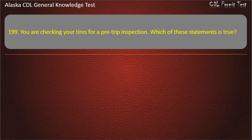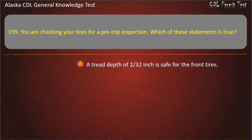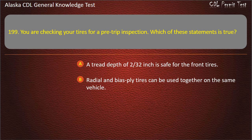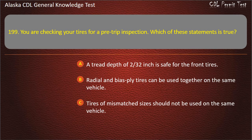Question 199. You are checking your tires for a pre-trip inspection. Which of these statements is true? A tread depth of 2/32 inches is safe for the front tires; radial and bias-ply tires can be used together on the same vehicle; or tires of mismatched sizes should not be used on the same vehicle. Answer: Tires of mismatched sizes should not be used on the same vehicle.